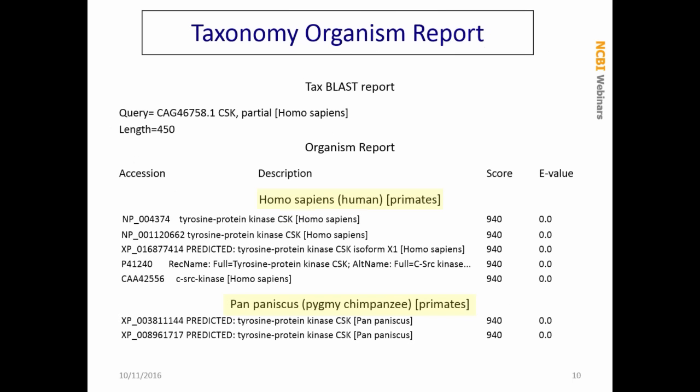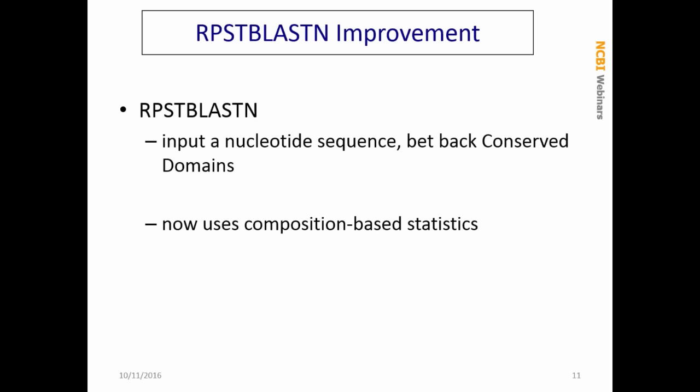Those are the two major changes. One of the improvements is a new output format option: output format 18 will give you a taxonomy organism report. If you're familiar with using this on the web, it's similar in look — it very nicely organizes the output by organism, as you see in this example. Finally, we now have composition-based statistics when you use RPS-TBLASTN. That program allows you to input a nucleotide sequence, does the translation, and searches against the conserved domain database to return conserved domains. RPSBLAST allows you to input a protein sequence; RPS-TBLASTN allows you to input a nucleotide sequence.